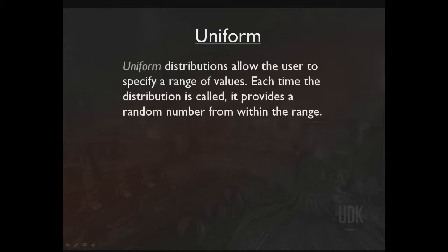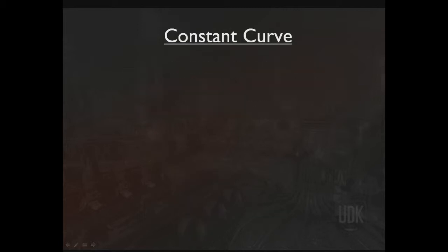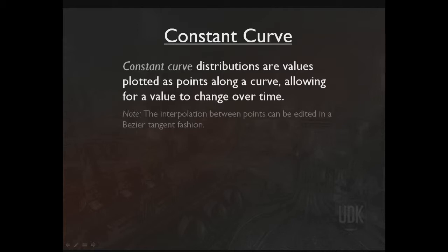A uniform distribution allows the user to specify a range of values. Each time the distribution is called, it provides a random number from within the range. An example for a float would be something like negative 30.055 up to 18.925. For a vector, you can see we've got a minimum value for X, Y, and Z and a maximum value for X, Y, and Z, and each time we call on that distribution, some number would be chosen from within that range. It should be noted that in the case of a vector, a random number will be chosen independently for each of the three axes. Moving along, we have constant curves.